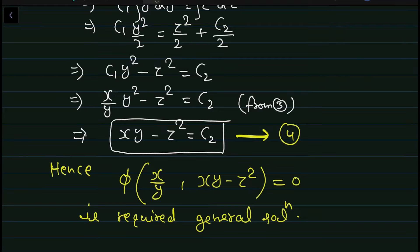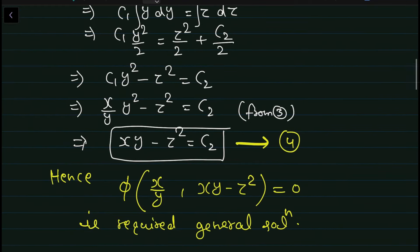Type 3 में जब ना तो first method लग पाए ना second method, तो हम Lagrange multipliers लेते हैं — x, y, z के functions — और एक नया fraction construct करके उसका integration करके solution find करते हैं। यह method number 3 भी काफी important है। Type 2 cover हुआ; next video lecture Type 3 को लेकर आऊंगा। Thank you for watching, students — like, share and subscribe my YouTube channel।